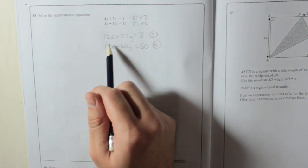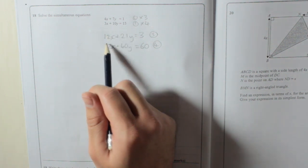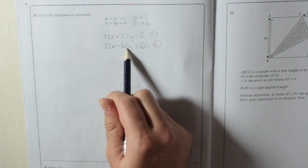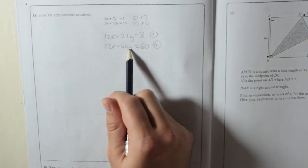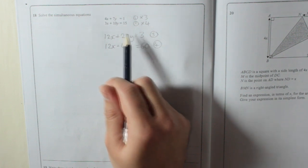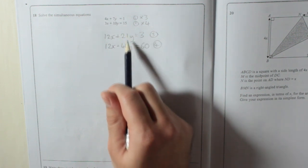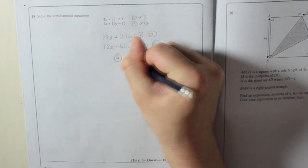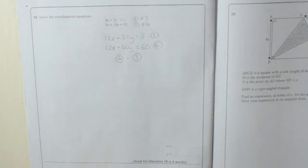It doesn't actually matter which one you subtract from the other, but what I usually do is take the one with the most y's—or whatever letter is left—and subtract the one with fewer y's. So I'm going to do 40y take away 21y, which means equation 4 take away equation 3. Always write down what you're doing.